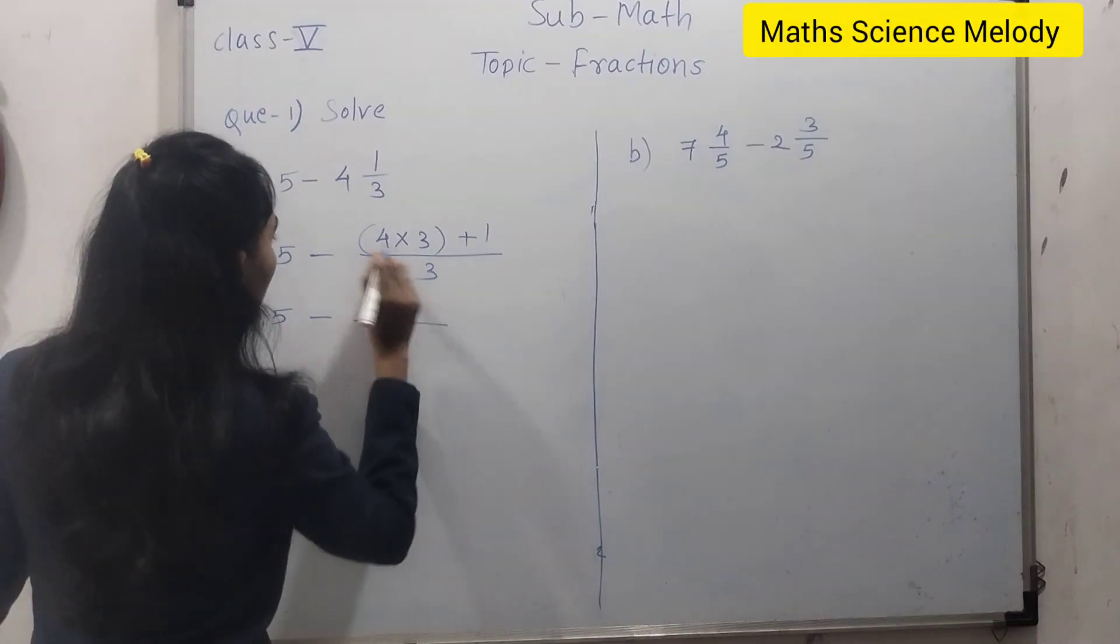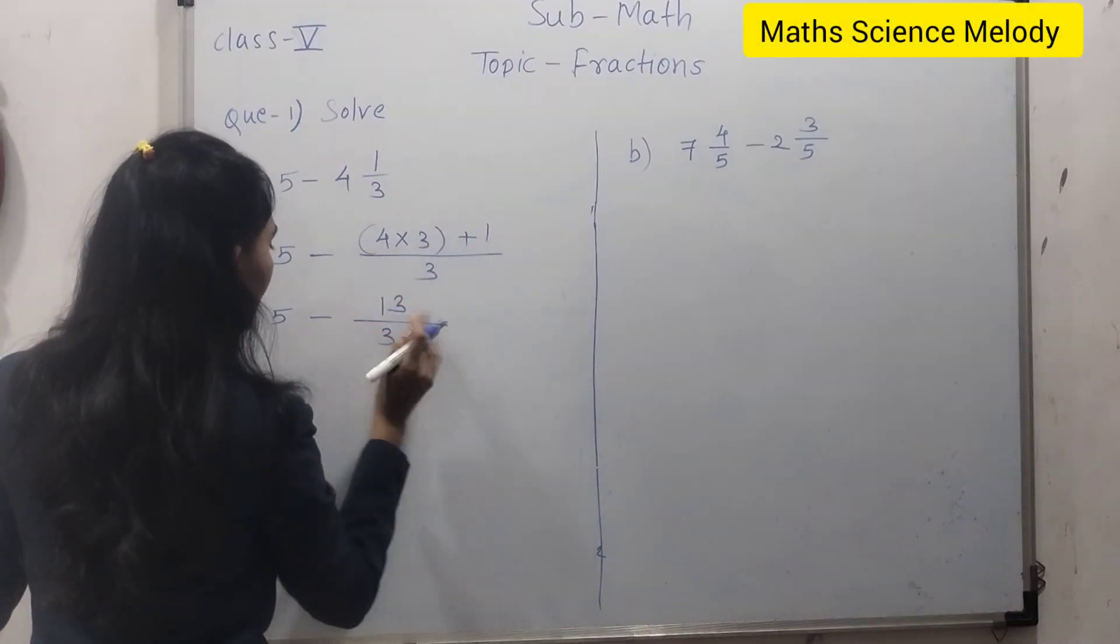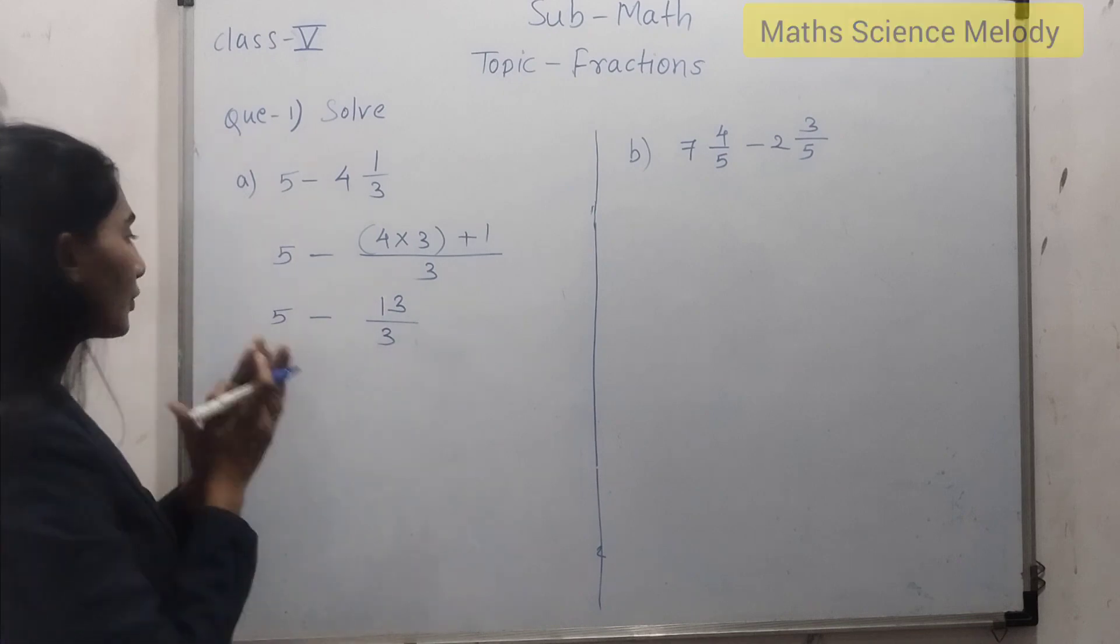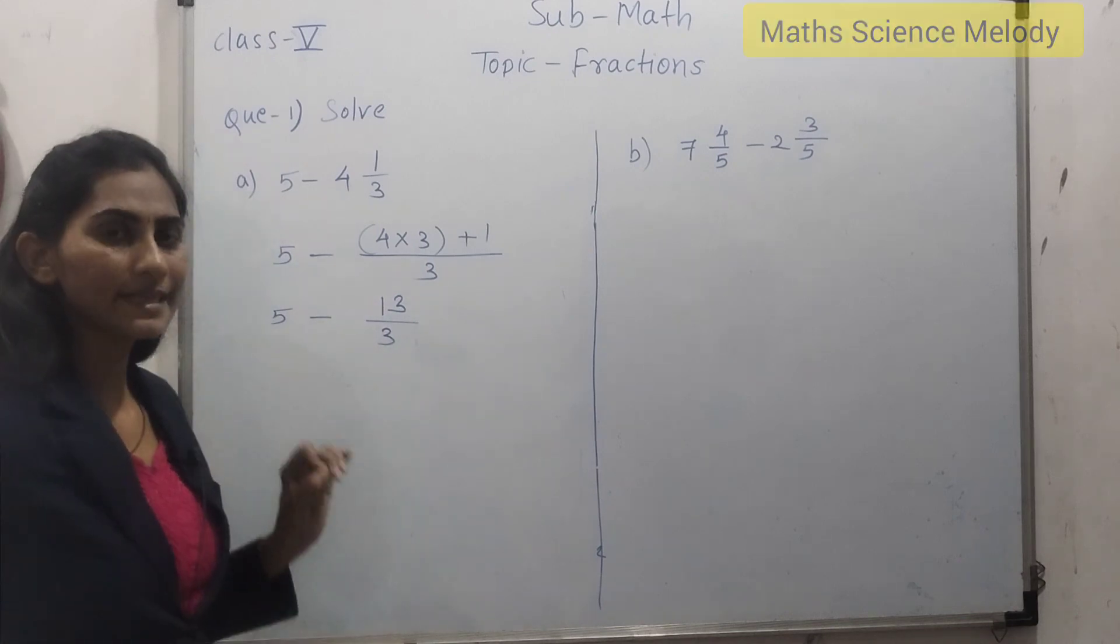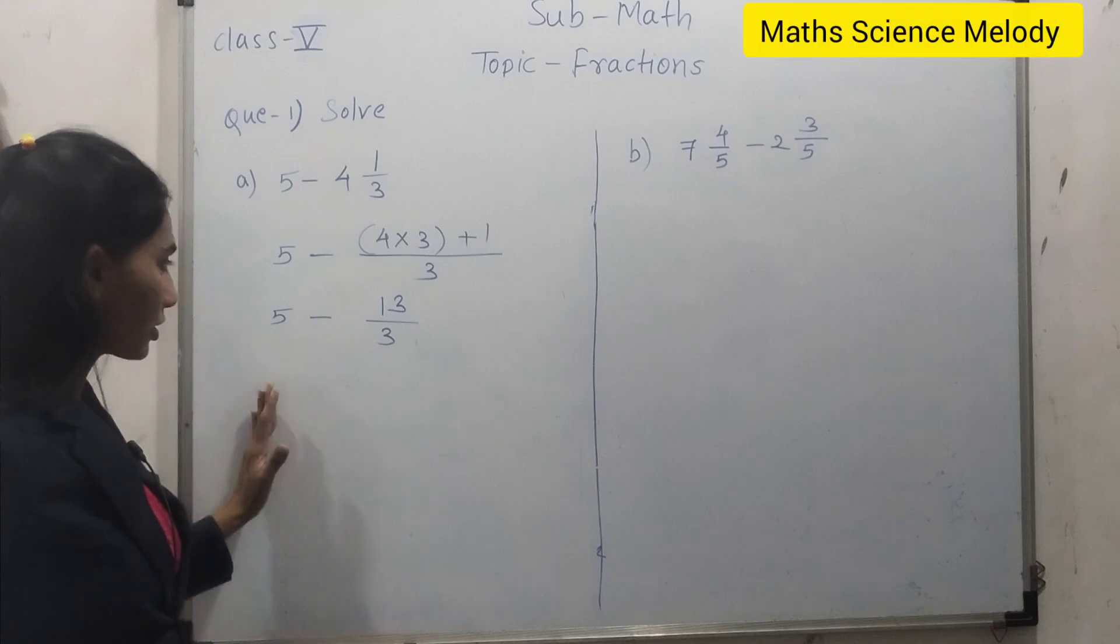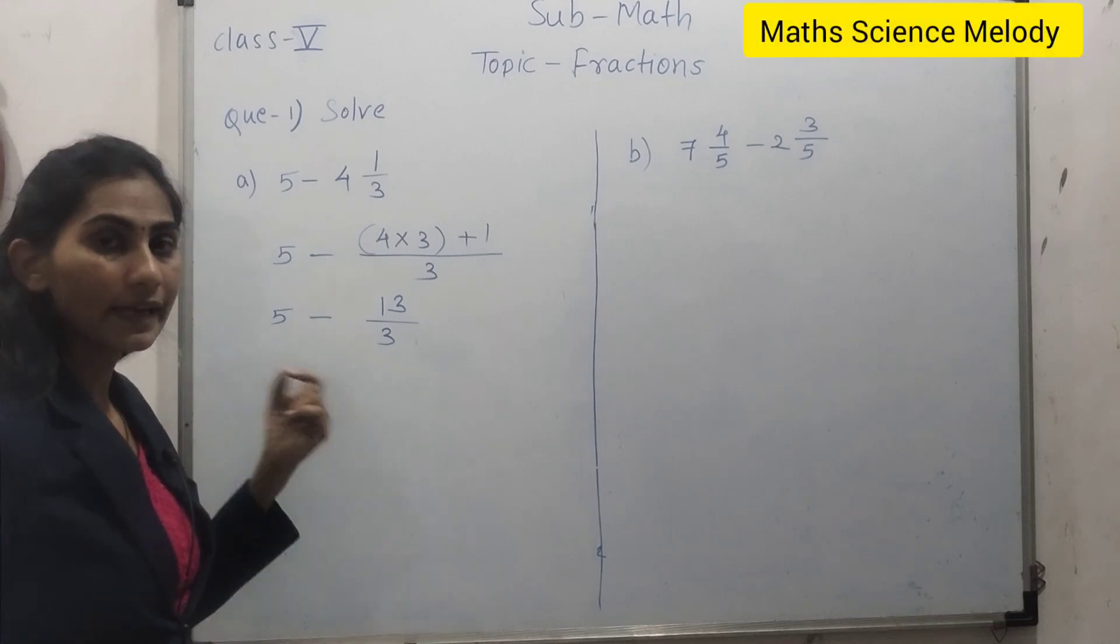Here you have 4 times 3 plus 1, which is 13 upon 3. Now if we do the subtraction, there is one rule: while subtracting fractions, their denominator should be equal or same.